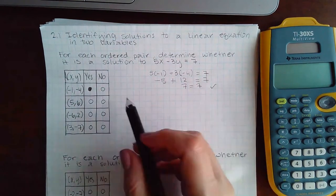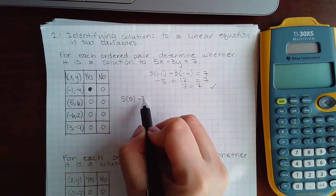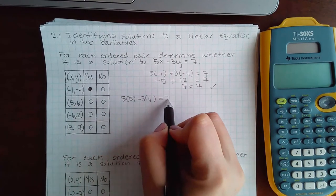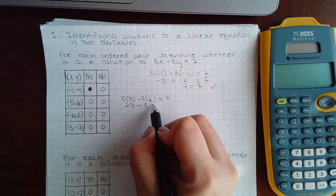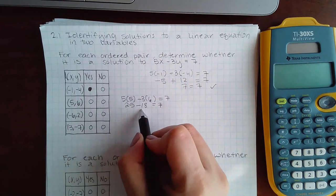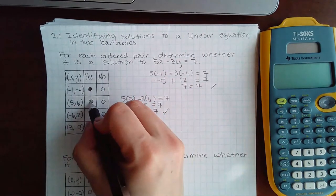Now for the next point, I would try to plug in 5 for x and 6 for y. So here I get 25 minus 18. And 25 minus 18 is, in fact, 7. So this is also yes.